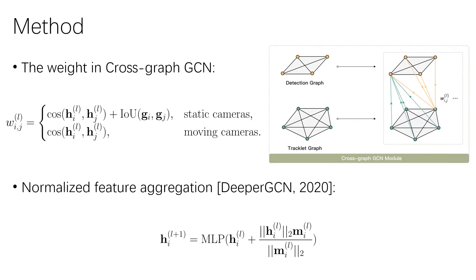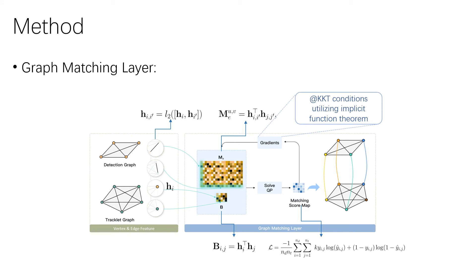To enhance the feature, after extracting the appearance feature of each object, we add a GCN between the detection graph and tracklet graph. The aggregation weight is the cosine similarity of the vertex features and the IOU of the bounding boxes when the video is taken by a static camera. When the camera moves, only the cosine similarity of the vertex features is considered. To make the aggregation more stable, we do message norm as in deeper GCN. After cross-graph GCN, the quadratic affinity matrix M and vertex affinity matrix B are calculated from the L2-normalized edge features and vertex features.